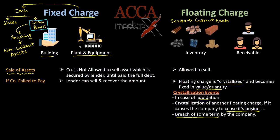In the case of a fixed charge, we know what the expected amount will be, because the debt is secured against a specific building or plant and equipment. But in the case of a floating charge, the amount of inventory and receivables may fluctuate day to day. For example, if the company purchases new inventory, the amount of inventory will increase. But if the company converts this inventory into finished product, the amount of inventory will be less. Only after crystallization can we predict the actual fixed amount or quantity.